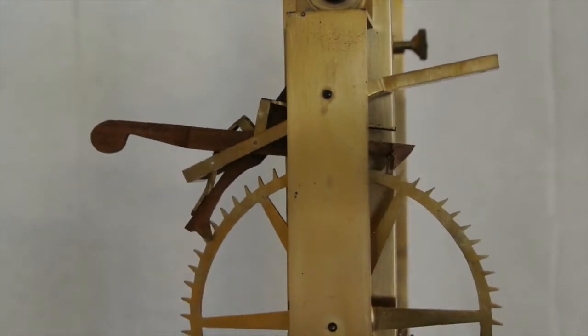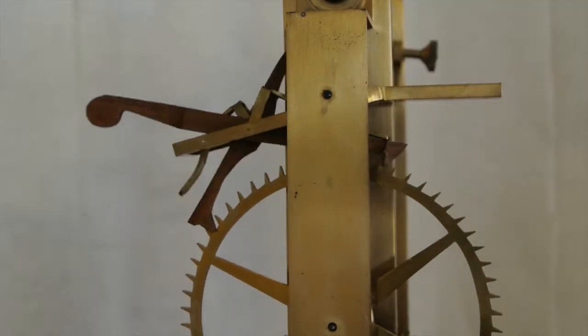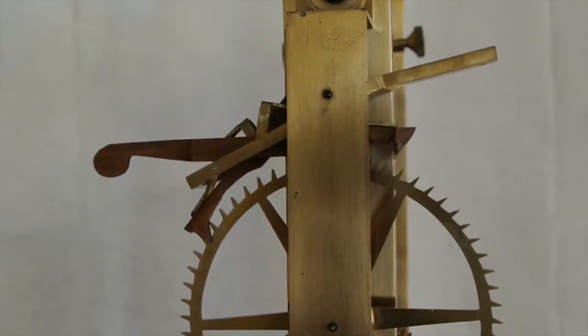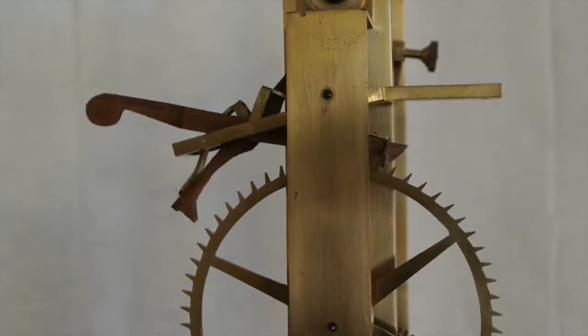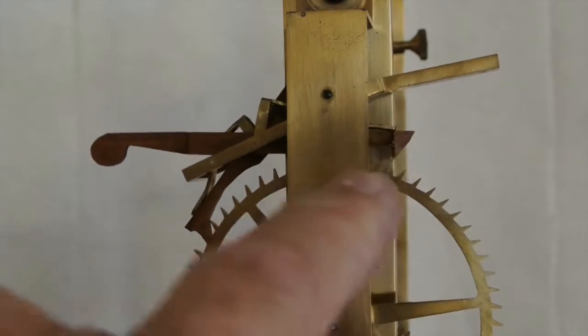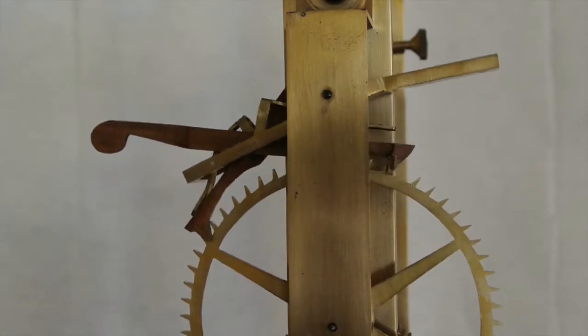The other difficulty is that if you catch the legs on the escape wheel with the escape wheel going round, of course it will cut through the wood quite quickly. So in the end I faced vertical grain down this leg which you can see, and that seems to have made it much more robust.